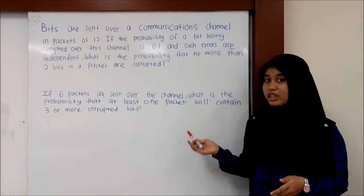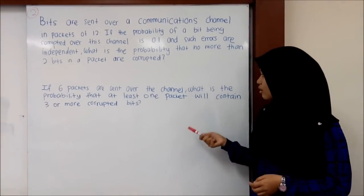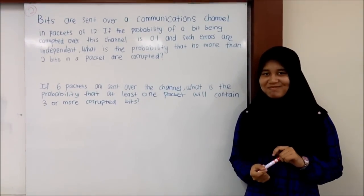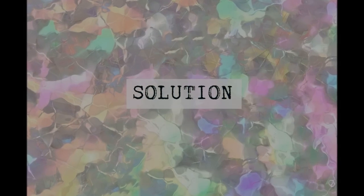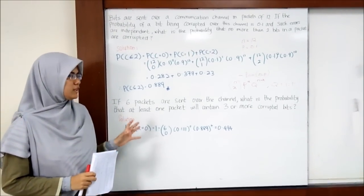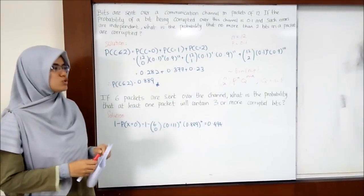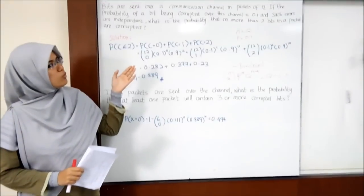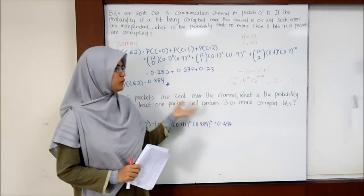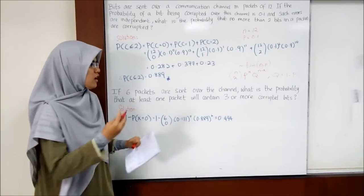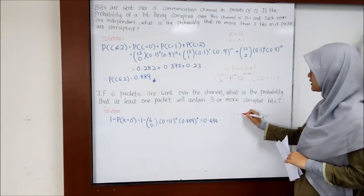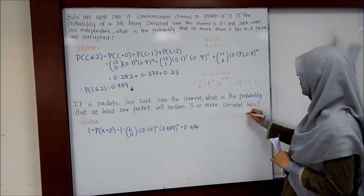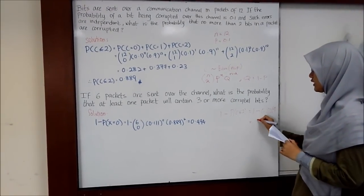The second part of this question: if 6 packets are sent over the channel, what is the probability that at least 1 packet will contain 3 or more corrupted bits? First, we find the probability of a packet containing 3 or more corrupted bits. Since we found P(c ≤ 2) = 0.889, we use 1 minus 0.889 to get 0.111. This probability of 0.111 becomes our new p for this part, and the new n is 6.